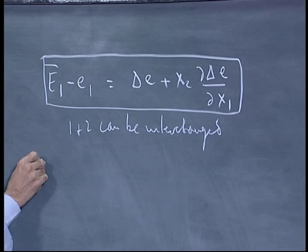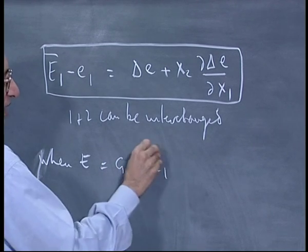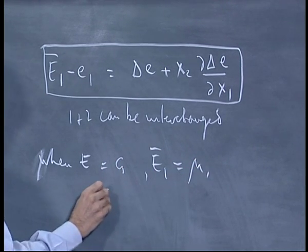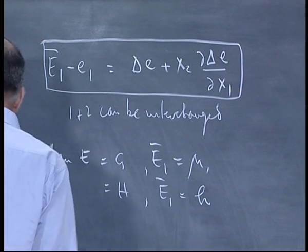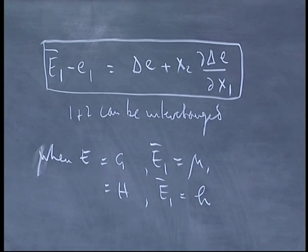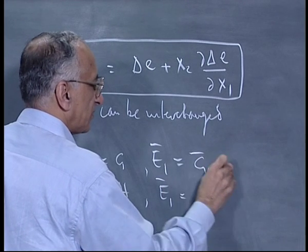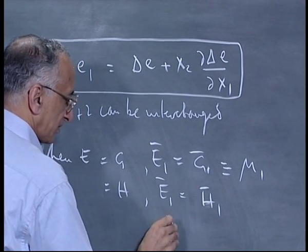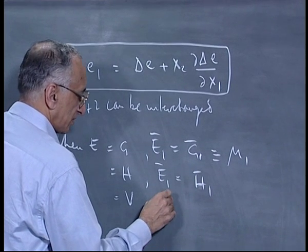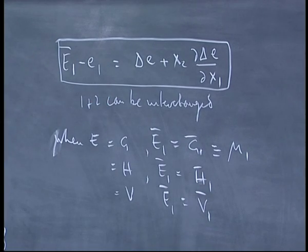In particular, when E equals G, E1 bar equals mu1; when E equals H, E1 bar equals H1 bar. G1 bar is identical with mu1. The theory links partial molar free energy directly to the chemical potential used in phase and reaction equilibrium calculations.